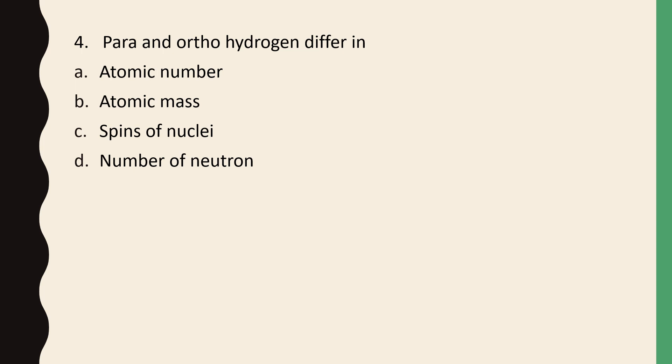Para and ortho hydrogen differ in atomic mass, atomic number, spin of electron, or number of neutrons. The correct answer is option C, spin of nuclei.